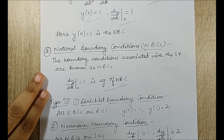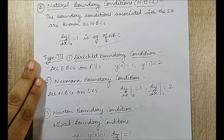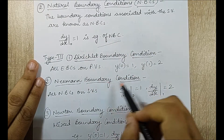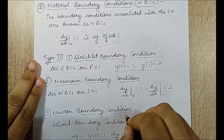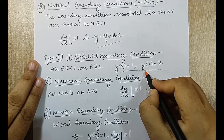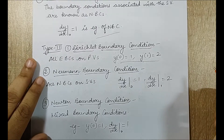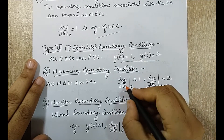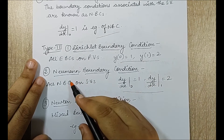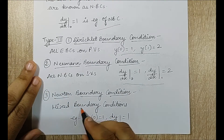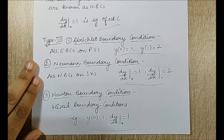Next is another boundary condition definition based on primary and secondary variables. The first is called the Dirichlet boundary condition — when boundary conditions contain only primary variables. When boundary conditions are only for secondary variables, that is called the Neumann boundary condition. The Newton boundary condition is another type with mixed boundary conditions, having both an EBC and an NBC.